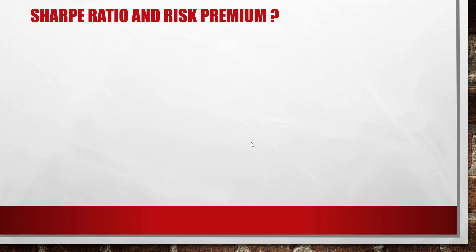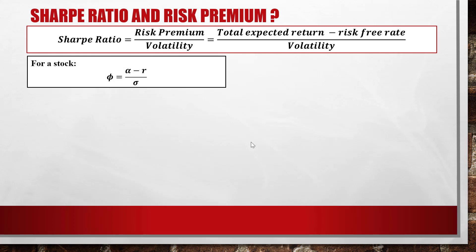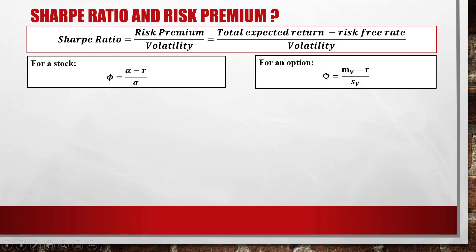Now let's consider the Sharpe ratio and risk premium. The Sharpe ratio is calculated as the risk premium over the volatility, and the risk premium is the total expected return minus the risk-free rate over the volatility. For a stock, phi equals (alpha minus r) over sigma, where alpha is the total expected return of the stock, r is the risk-free rate, and sigma is the volatility. For a derivative, phi equals (mu_V minus r) over sigma_V, where mu_V is the total expected return of the derivative and sigma_V is its volatility.